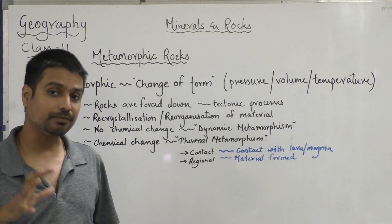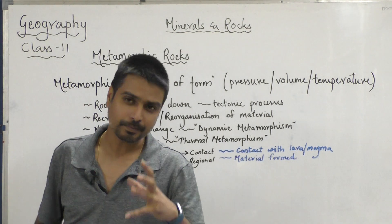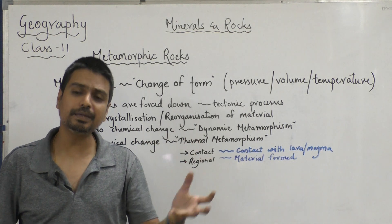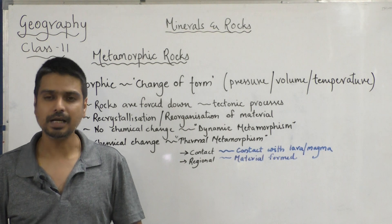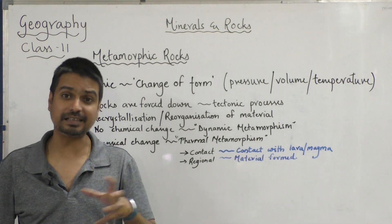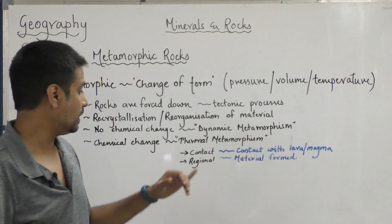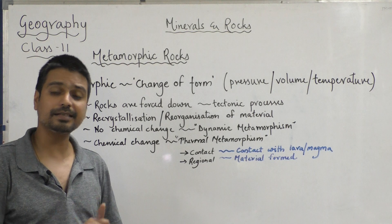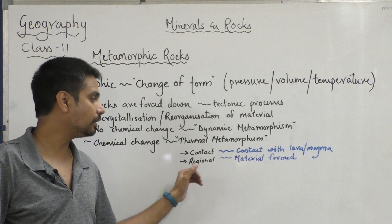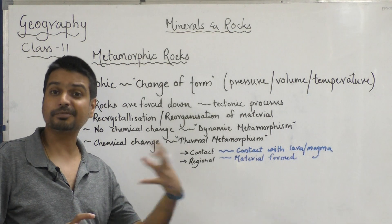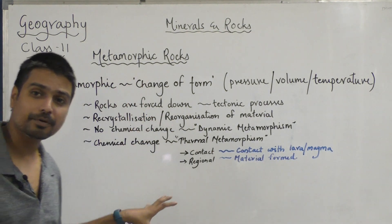And regional metamorphism woh hota hai, aksar hum dekhte hain ki lava or magma ke karan, some new elements and compounds or mixtures usually come up on the surface of the earth. Jab yeh naye chemicals ya substances hamare rocks se milte hain, tab hota hai regional metamorphism. Kyunki yeh poore tariqe se rock ko lava or magma contact se asar nahi hota hai — it gets changed due to the substances that come up with lava or magma. So now I guess you know the topic of metamorphic rocks.